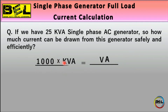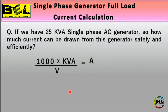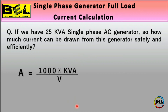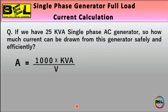Rearranging the formula: multiply both sides by 1000 and divide by voltage. The result is: Ampere = (1000 × kVA) / Voltage. Now we have the values of kVA and voltage, so let's calculate the total current.